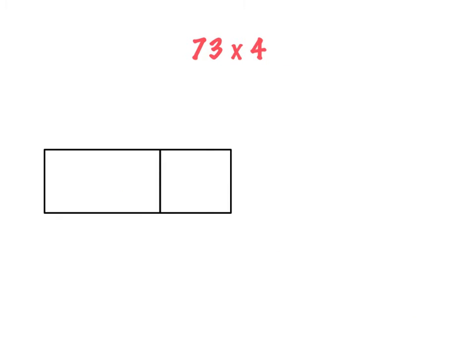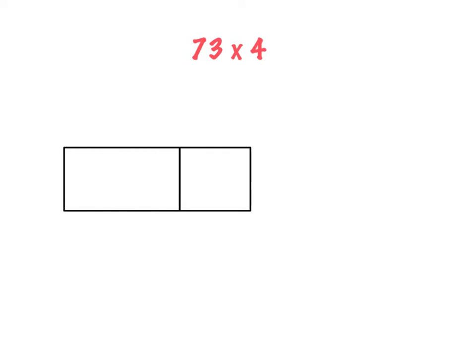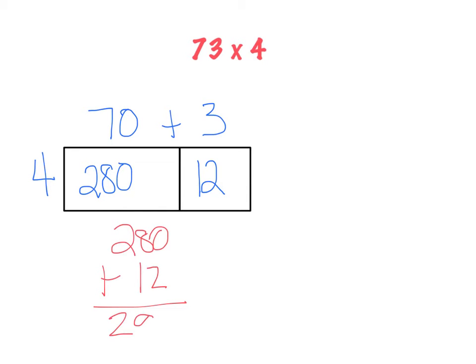Okay, now we're going to move this a step forward. So here I have for you our area model for 73 times 4. So you should see how this sets up. We have 70 plus 3 times 4. So I'll start by multiplying 70 times 4, because I multiply the 10's place times the 1's place, so 280. And then 3 times 4, which is 12. And then, of course, we're going to add together 280 plus 12. So 280 plus 12 is 292.